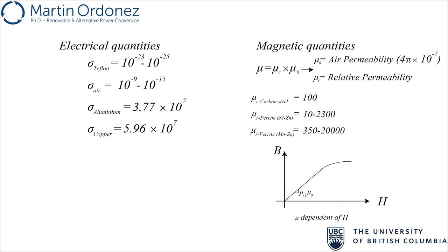Unfortunately, magnetic materials exhibit saturation with increasing field intensity. When operating with low field intensities, mu — the ratio of B to H — is constant and the B-H curve is linear. As field intensity increases, the slope of the B-H curve reduces and permeability drops. When B exceeds the saturation flux density, the relative permeability drops to 1, and the permeability of the material becomes similar to that of free space.